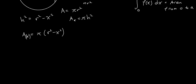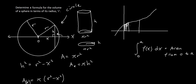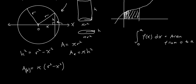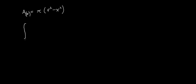We can write the cross-section area as a function of x: A of x equals pi times (r squared minus x squared). Now, just like we integrate a function to get area, here since we have a function for the cross-sectional area, if we integrate it we'll get volume. The bounds we care about are from negative r to positive r — the full extent of the sphere along the x-axis.